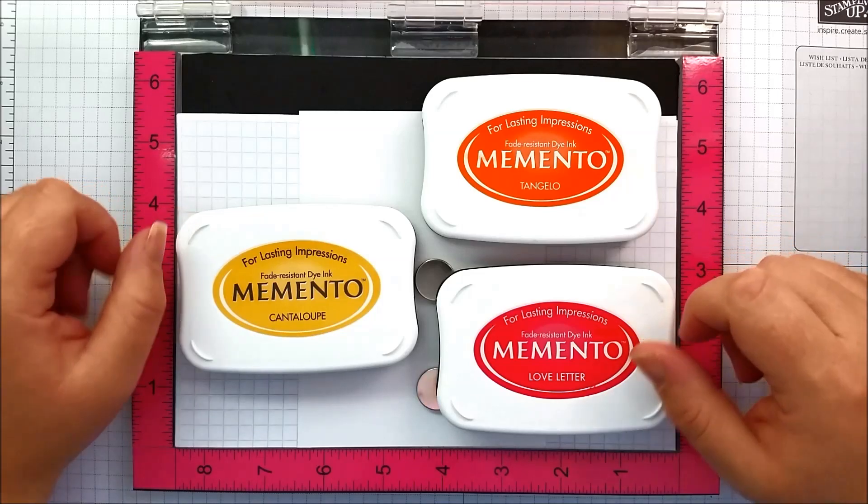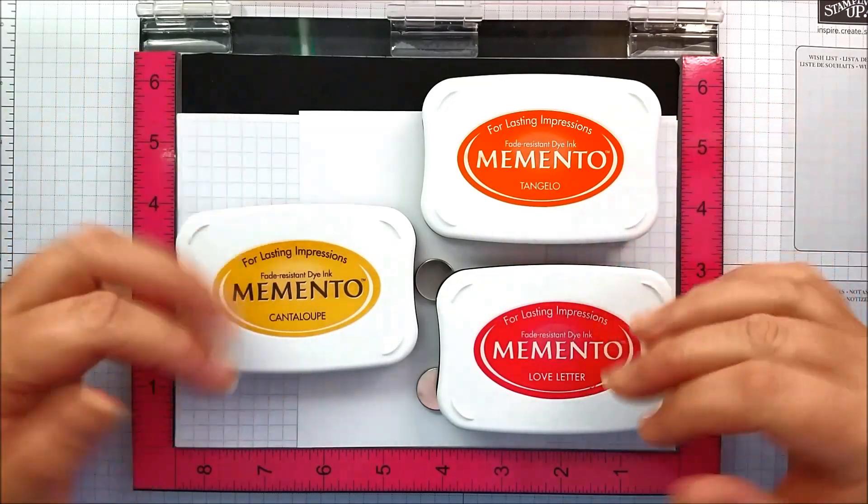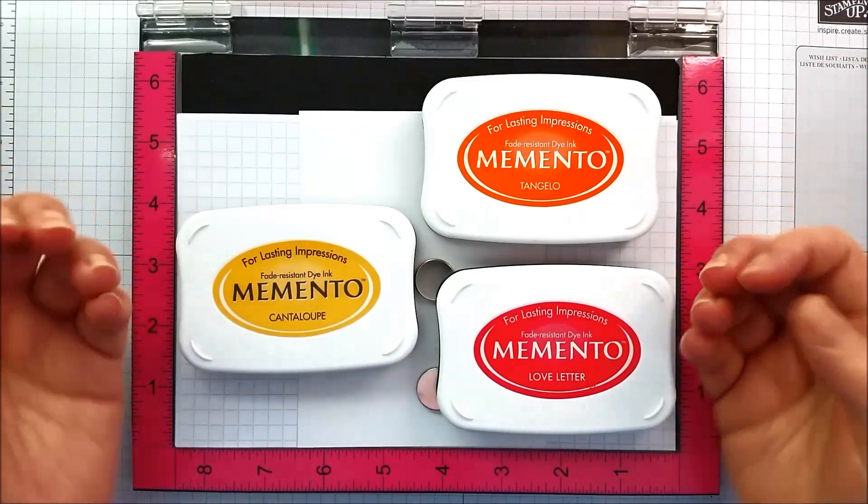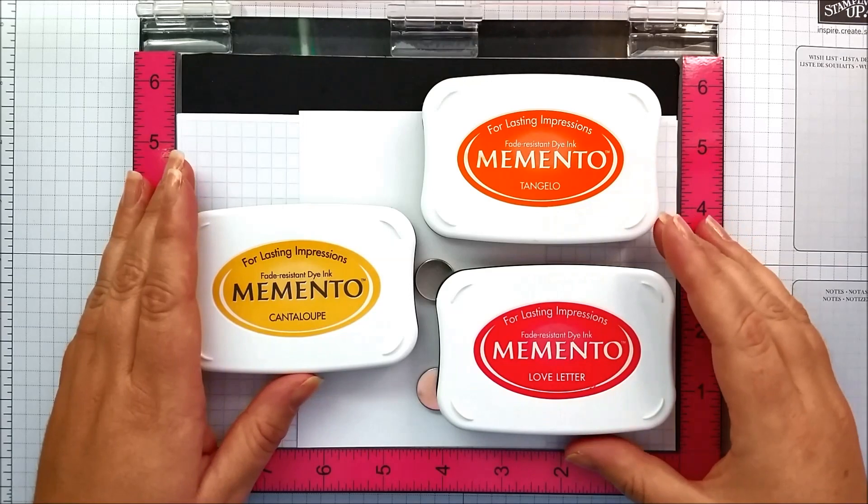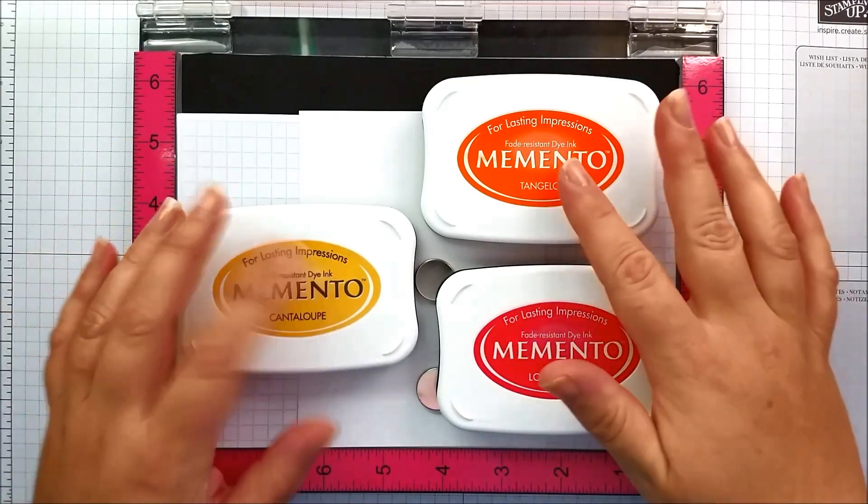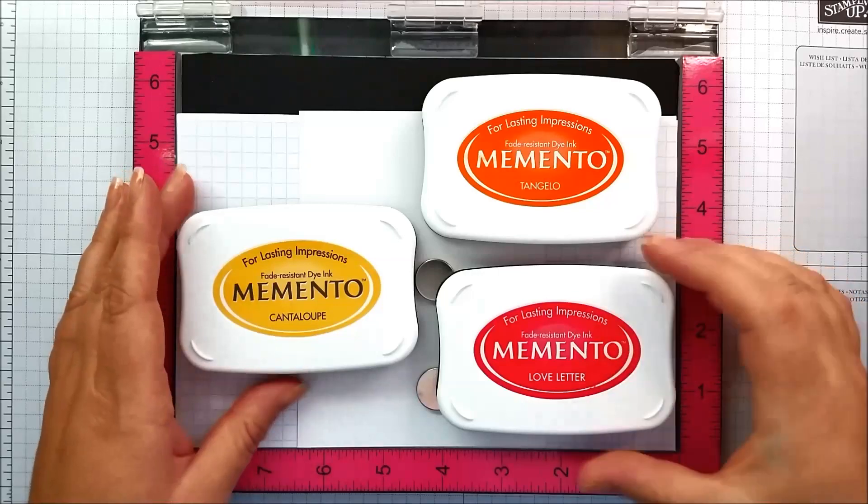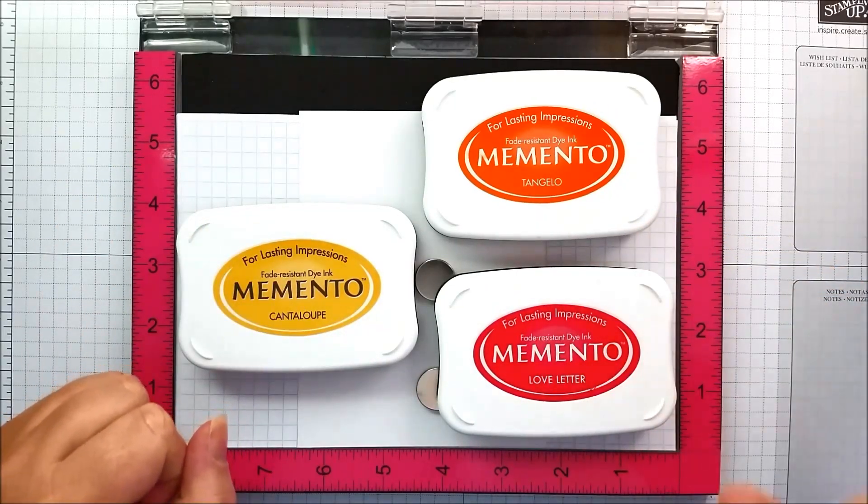So let's grab some inks and play. Part of the fun of creating is stepping outside the norm. When you normally think of waves you think of blues, maybe a little green to mimic the sea, but today we're going to use fun summer yellows, oranges and reds. I pulled out my Memento inks.